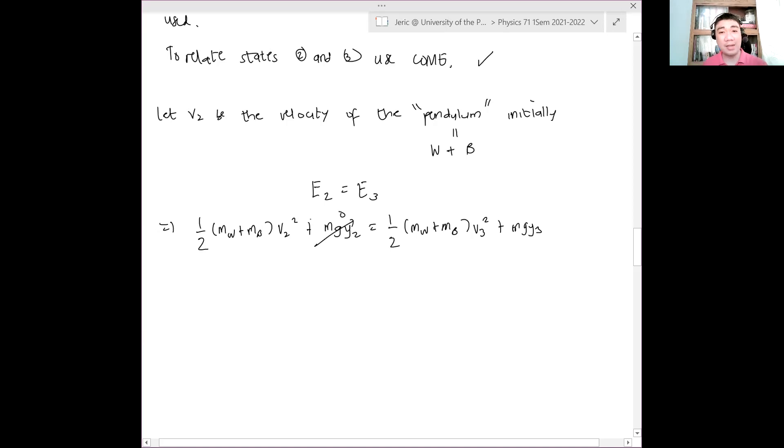Then, what can we say about the final velocity at state three? Zero also. Zero also, of course, because the object stopped. It goes at some height Y. So this is also zero. And this shouldn't be m. This should be MW plus MB. Sorry for that. g Y3. Okay? And of course, these masses will just cancel, giving us the following relationship. One half V2 squared equals g Y3.